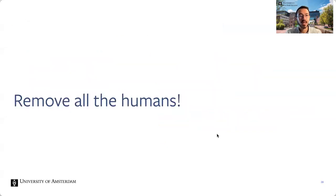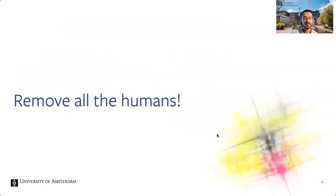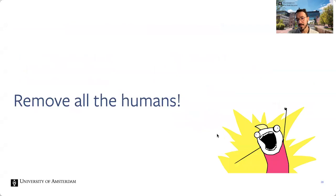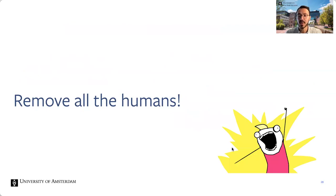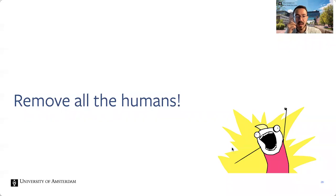So what did we do? We removed all humans from the pre-training set — not because we don't care about them but because of the opposite: we want a dataset that is safe, legal, and as unbiased as possible. Having humans in the dataset is just too difficult for de-biasing, as we don't know the confounders or how this could be done in a systematic and safe way.